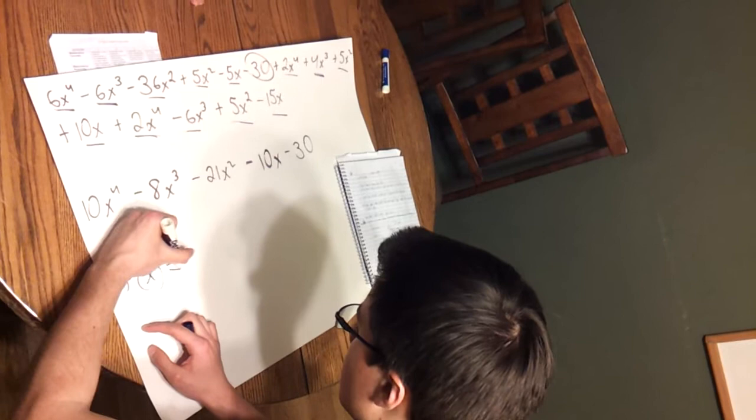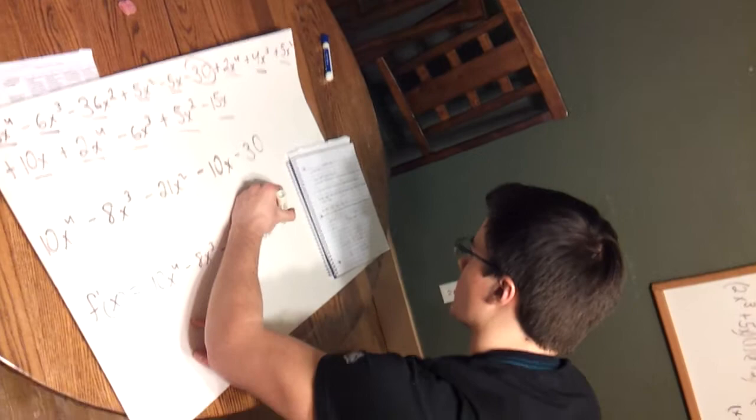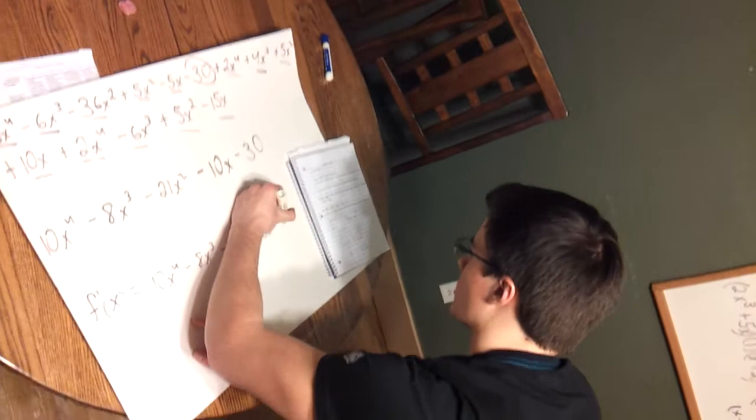And your answer is... The final answer is 10x to the 4th minus 8x to the 3rd minus 21x squared minus 10x minus 30. And that is how you find a derivative of problem number 35 on page 147. Thank you.